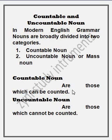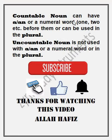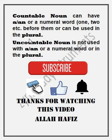Countable nouns are those which can be counted — countable noun وہ چیزیں ہیں جنہیں ہم گن سکتے ہیں. Uncountable nouns are those which cannot be counted. Countable noun can have 'a' or 'an', or a numeral word — one, two, etc. — before them, or can be used in the plural. Countable noun، a اور an کے ساتھ استعمال ہوتے ہیں، plural میں بھی، یا numbering کے لیے one, two, three — جنہیں ہم count کر سکتے ہیں.